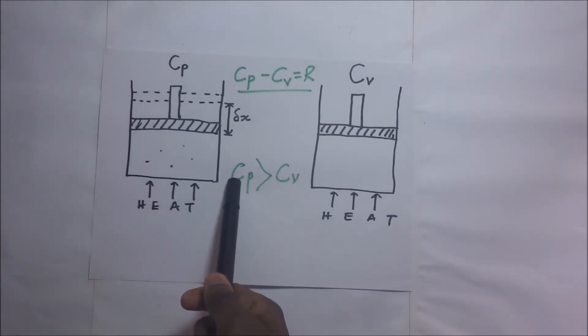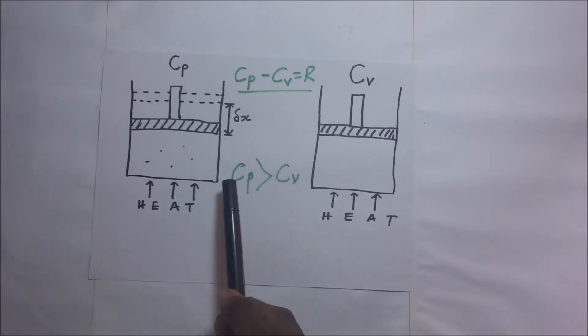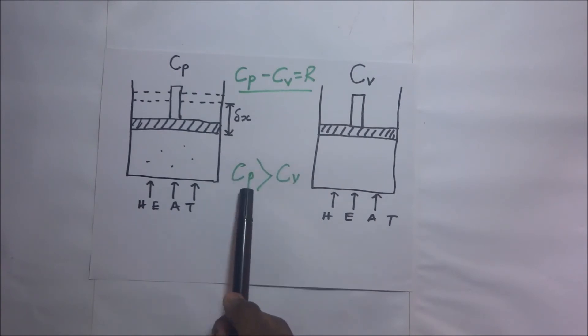This CP, it's sometimes looked at as the molar heat capacity at constant pressure. And this is molar heat capacity at constant volume. Or you call it the principal molar heat capacity at constant volume.